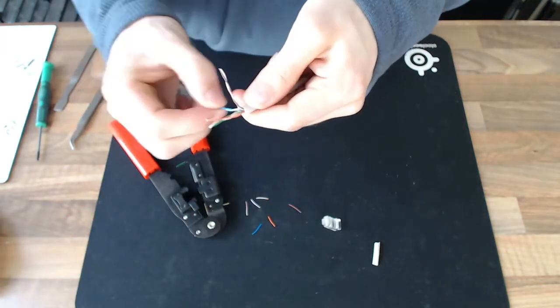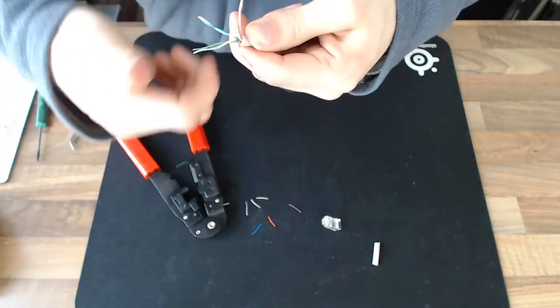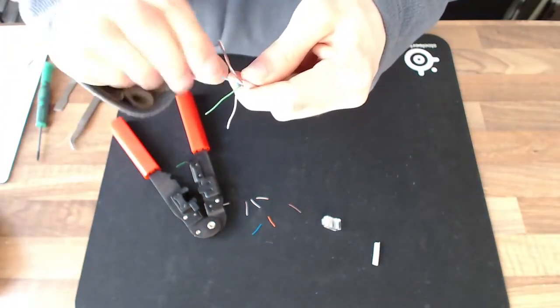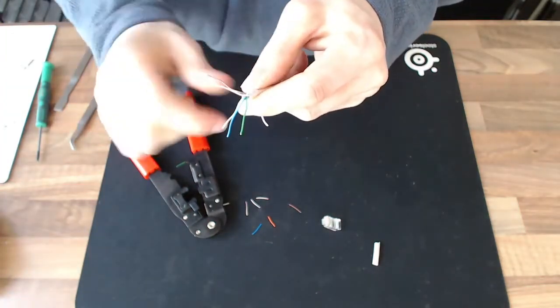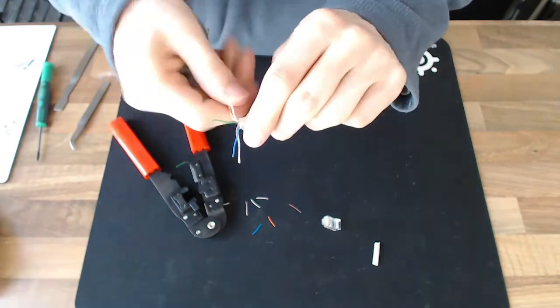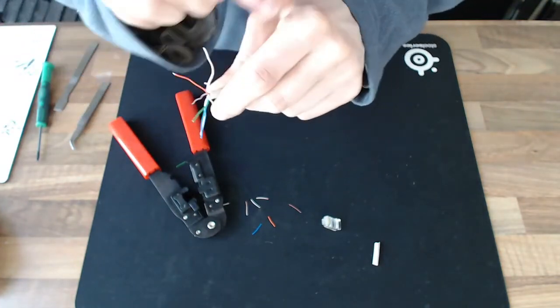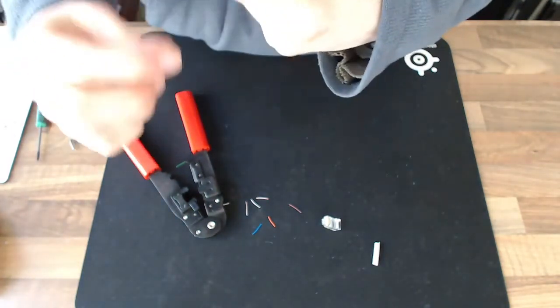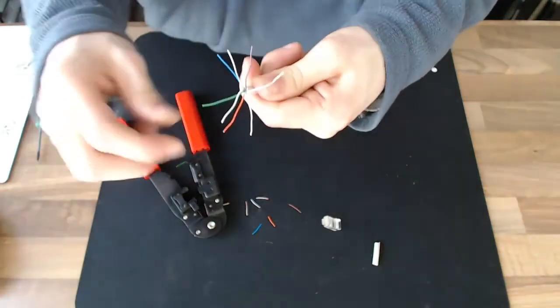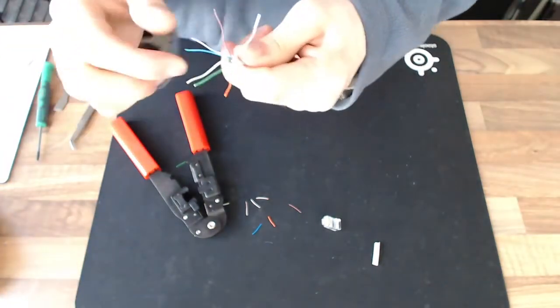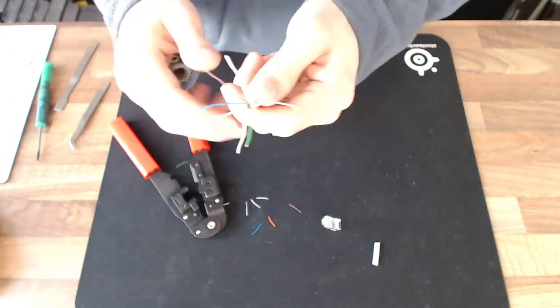Cut the end off. Separate out the pairs. Separate the wires of the pairs. Straighten the wires.